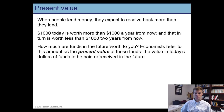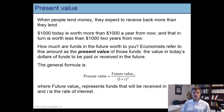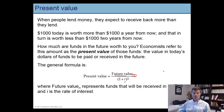Money received in the future is discounted because its value today is less than its value in the future. The formula on this slide shows you mathematically how to calculate the present value of a future amount of income. Suppose the future amount of income is received N years into the future and the variable i is the interest rate. To get the present value, you take the amount of money to be received in the future and divide it by one plus the interest rate raised to the Nth power.